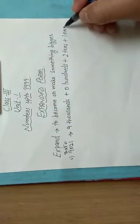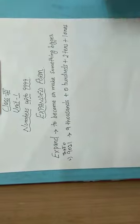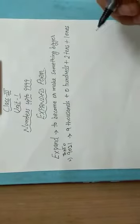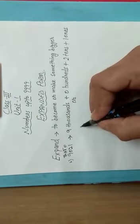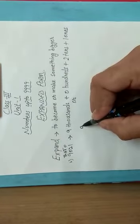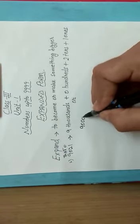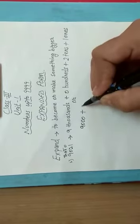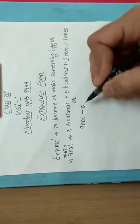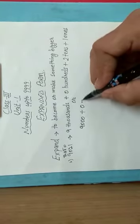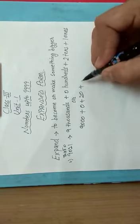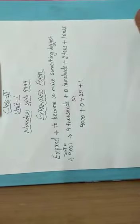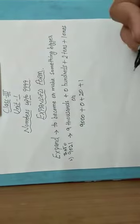Then 2 is at the tens place, so we will write 2 tens. And at last, 1 is at the ones place. So this is the first way to write a number in expanded form. Or we can also write it another way: 9 thousands plus 0 hundreds, which means 0, plus 2 tens plus 1 ones.